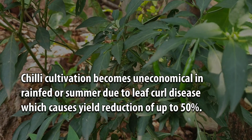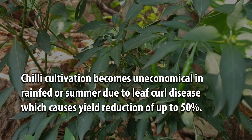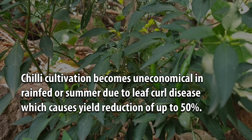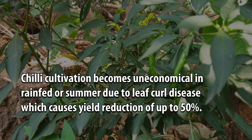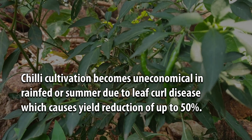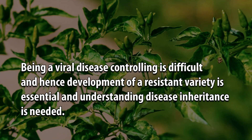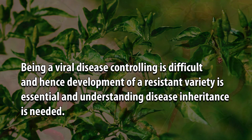Chili cultivation becomes uneconomical in rainfed or summer conditions due to leaf curl disease, which causes yield reduction of up to 50%. Being a viral disease, controlling it is difficult, and hence development of a resistant variety is essential and understanding disease inheritance is needed.